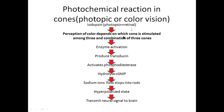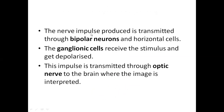In cones, the photopigment is iodopsin, a combination of photopsin and retinal. Cones are responsible for color vision and are sensitive to three important lights — blue, green, and red — whose combinations produce other colors. Light stimulation of cones triggers transducin activation, phosphodiesterase activation, and hydrolysis of cyclic GMP, which stops sodium ion entry and causes hyperpolarization. This generates an action potential and a neuronal signal that passes through the retinal layers to the optic nerve and reaches the brain.